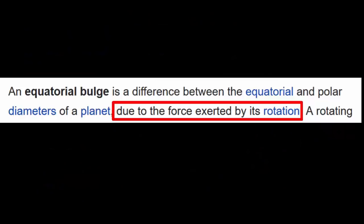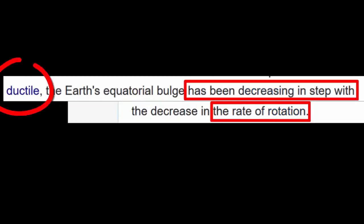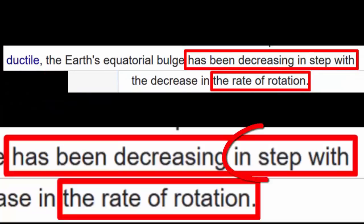Here's what Wikipedia says. An equatorial bulge is due to the force exerted by its rotation, and it says the Earth is ductile, which means malleable, flexible. The Earth's equatorial bulge has been decreasing in step. There's the key, in step, with the decrease in the rate of rotation.